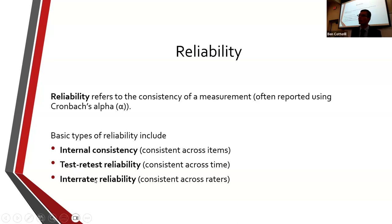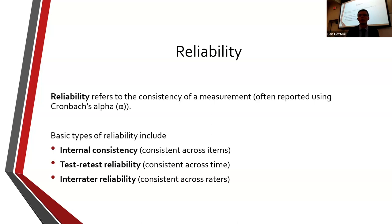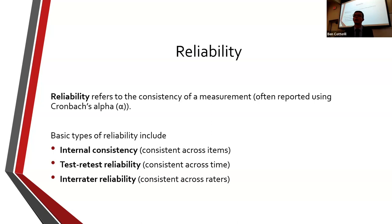Inter-rater reliability is consistency across raters. It has to be the same measurement, so this is likely going to be informant reports. Maybe I give an informant report to your mother, your father, a friend, another friend, other relatives — multiple raters. If this is a good measurement for measuring someone else's personality or shyness, there should be good consistency between all the raters. We're again looking for a high positive correlation between them.